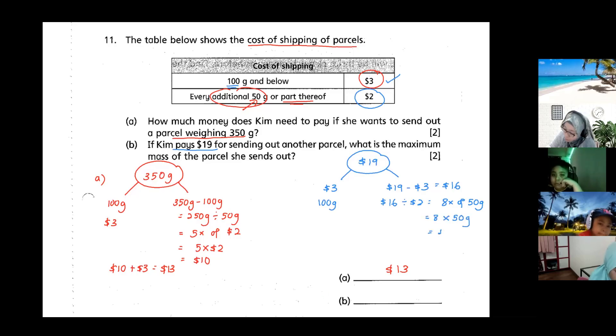So which means eight times 50 grams equals to 400 gram. So I want to know what is the maximum, I take 400 gram plus 100 gram, I'm going to get 500 gram. This is the answer for part b, 500 gram.